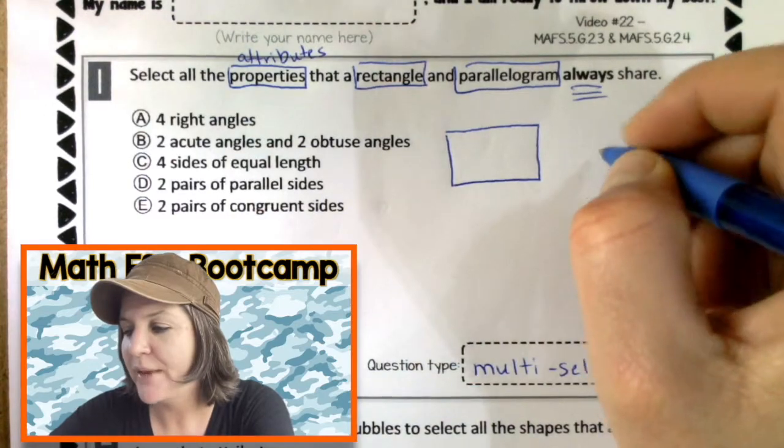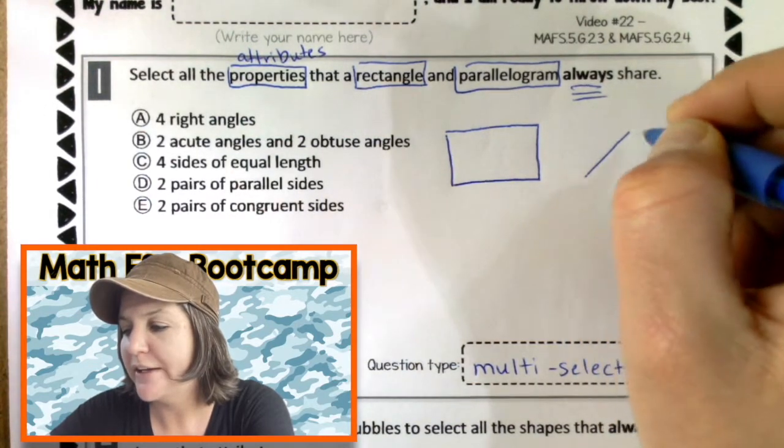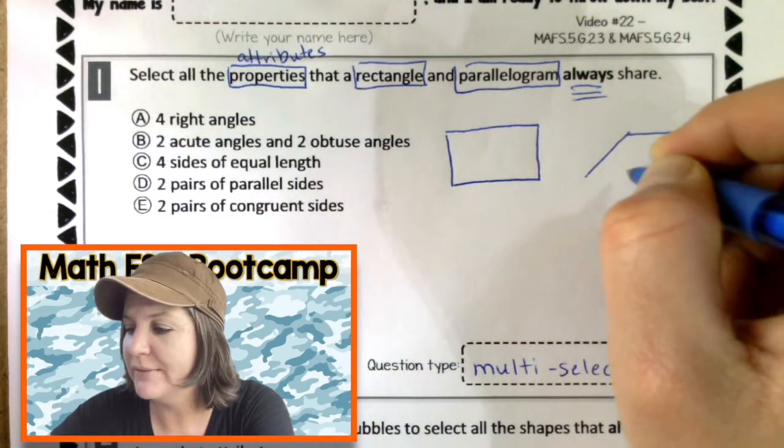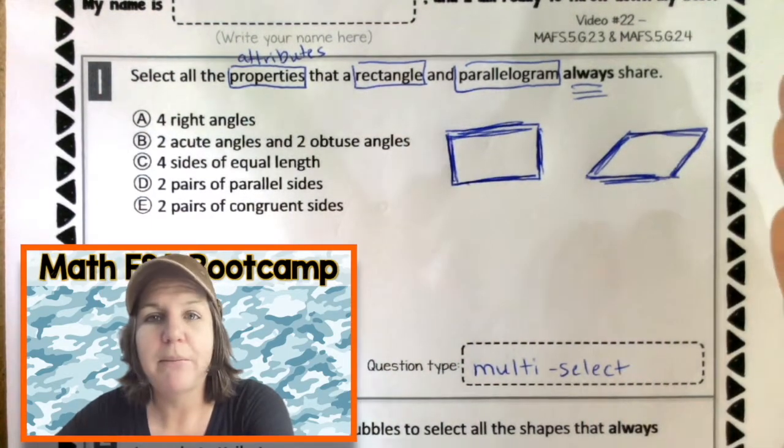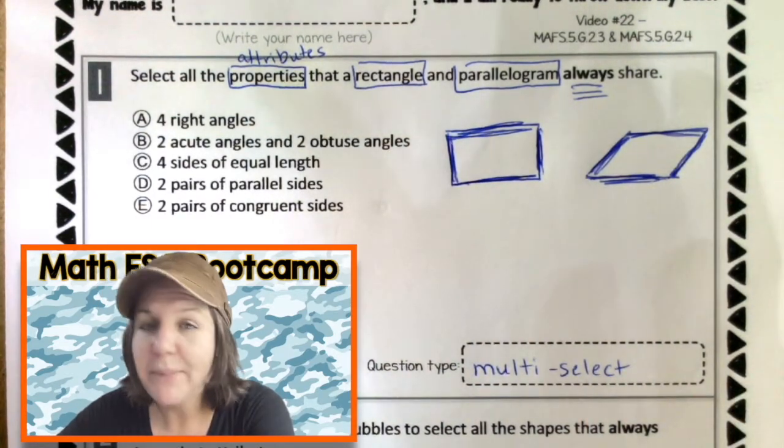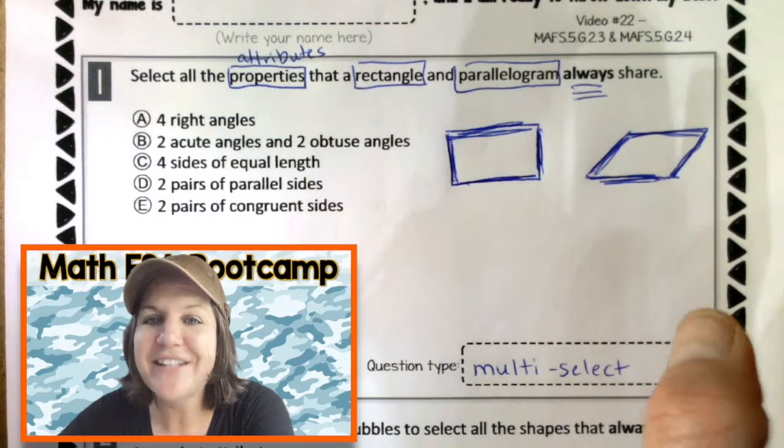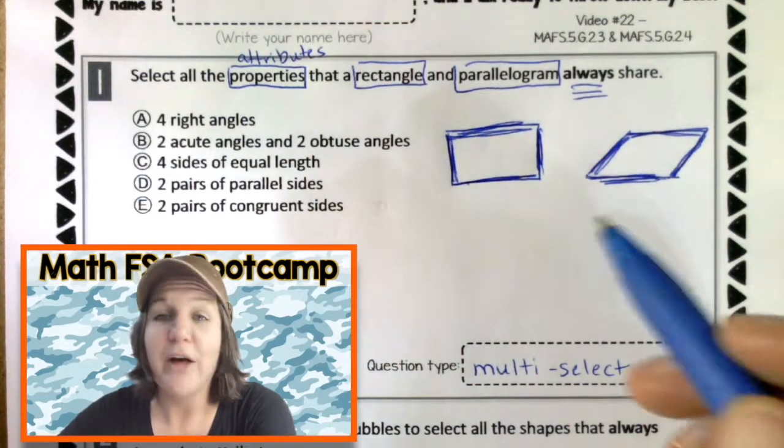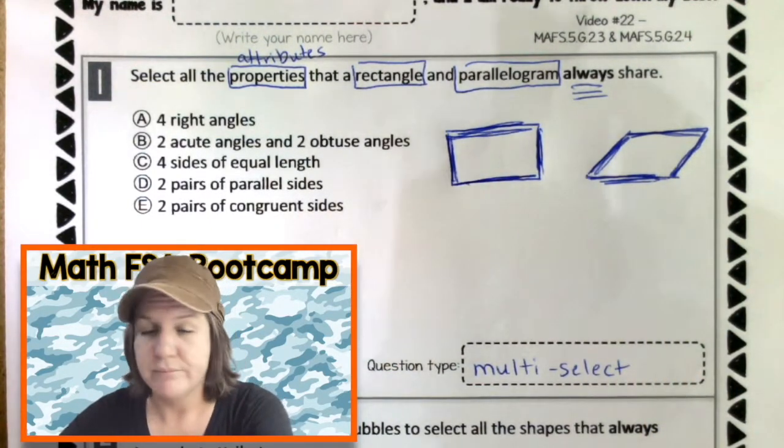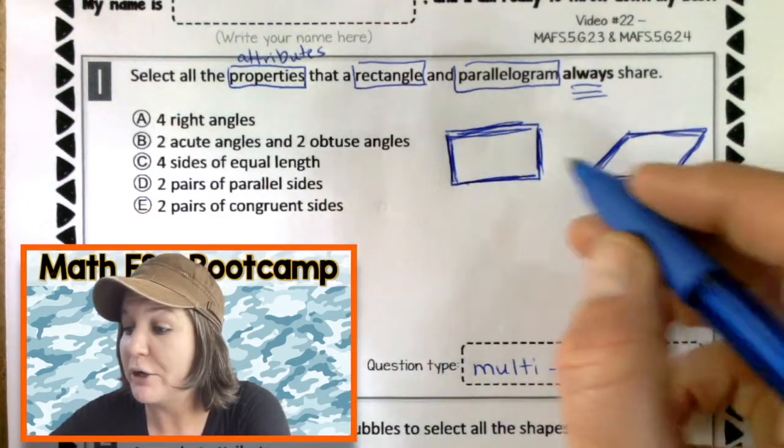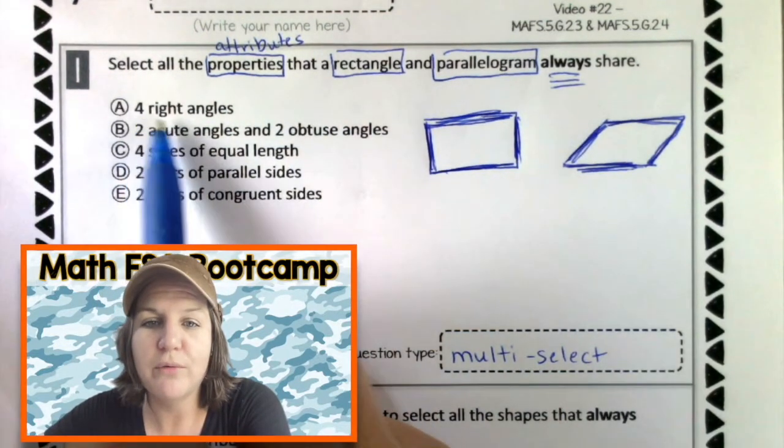A multi-select. Yes. Which means there should be more than one correct answer. So we will go through them all and choose the correct ones. All right. This says select all of the properties. Another word for properties would be attributes. So if you see attributes or properties or characteristics, that a rectangle and a parallelogram always share. So to do that, I'm going to draw a rectangle just so what I'm looking at it and thinking about it doesn't have to be perfect. Just helps me. And a parallelogram typically looks like a rectangle that's been kind of pushed over.